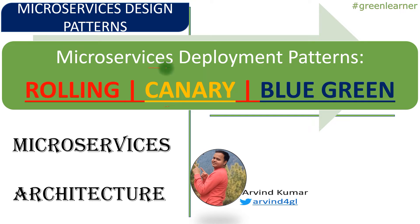Hey everyone, this is yet another video about microservices deployment patterns. In this video I'm going to explain rolling, canary, and blue-green deployment. If you remember the previous video, I talked about deployment patterns, but this list is different. The previous video was about deploying your first application and which strategy to follow. This one is applicable when we already have an existing application running in production.